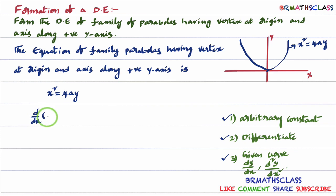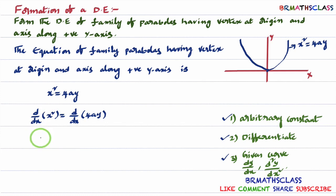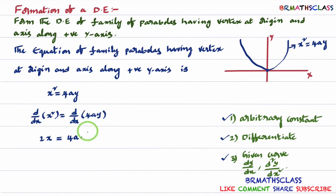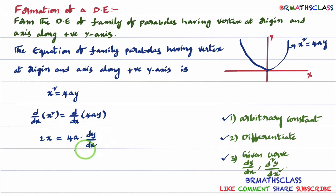Differentiate x² = 4ay with respect to x on both sides. The derivative of x² with respect to x is 2x. On the right side, 4a is a constant, so we take 4a outside, and the derivative of y with respect to x is dy/dx. So we get 2x = 4a·(dy/dx). After one differentiation, the arbitrary constant 4a is still present — it is not yet eliminated.